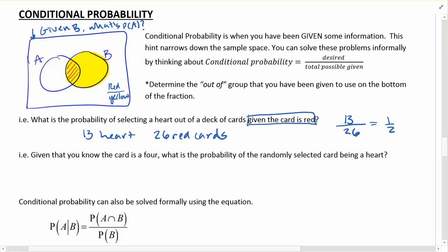Given that you know a card is a 4, so that's our hint, that is the out of, that becomes the bottom of the fraction. What is the probability of a randomly selected card being a heart?